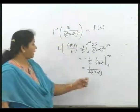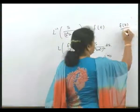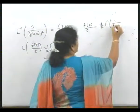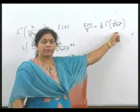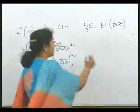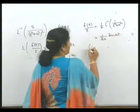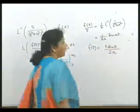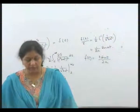So L of f(t)/t equals 1 by 2 of 1 upon (s² + a²). Taking the inverse, f(t)/t equals 1/2 times L inverse of 1 upon (s² + a²), which is 1/2 times (1/a) sin(at). Therefore f(t) equals t sin(at) divided by 2a. This result is obtained using the inverse Laplace transformation integral property.